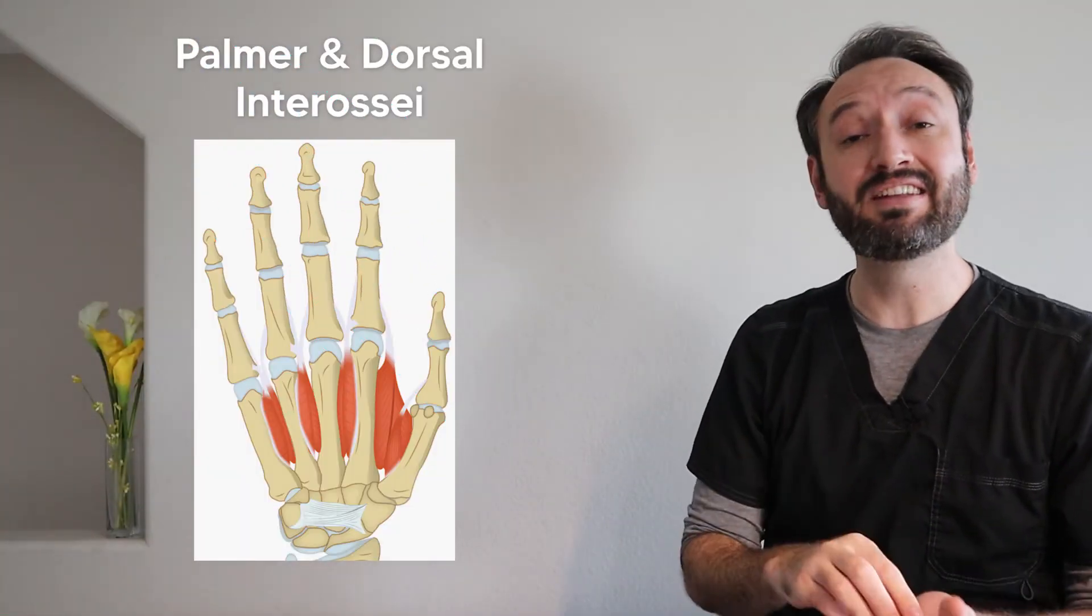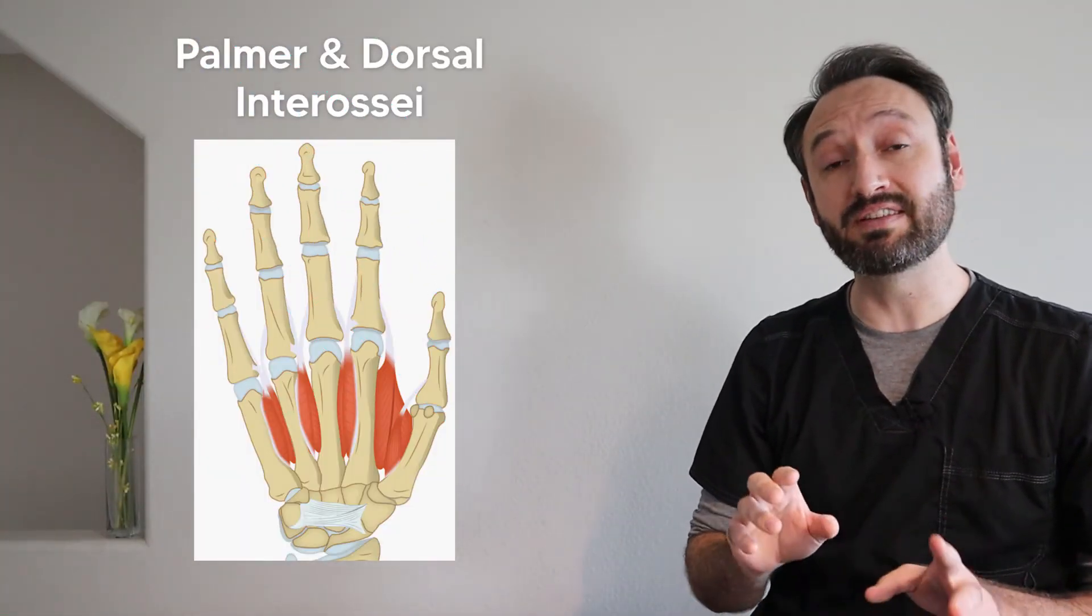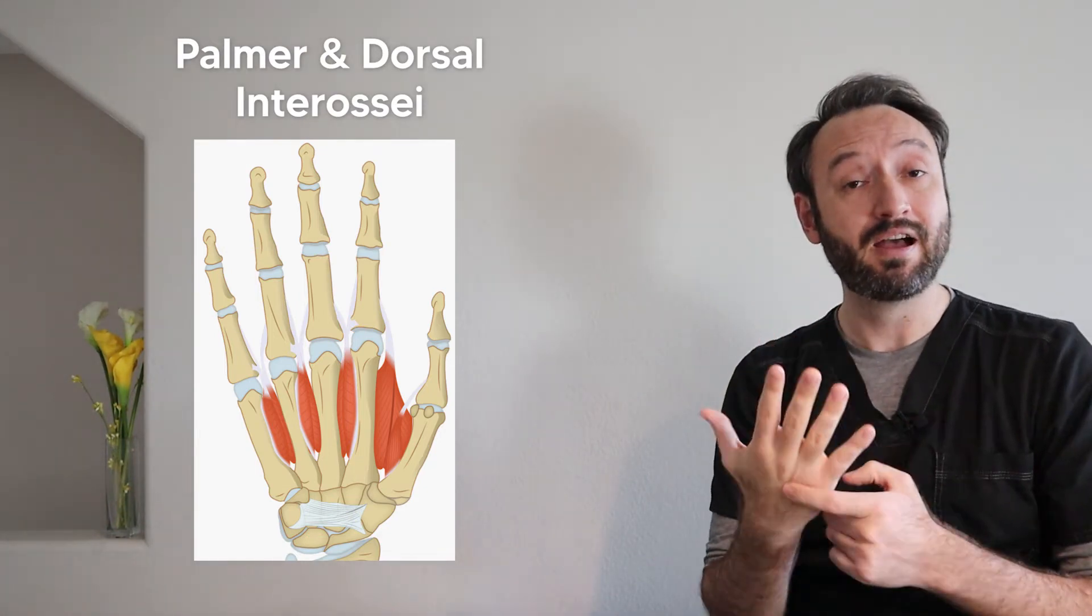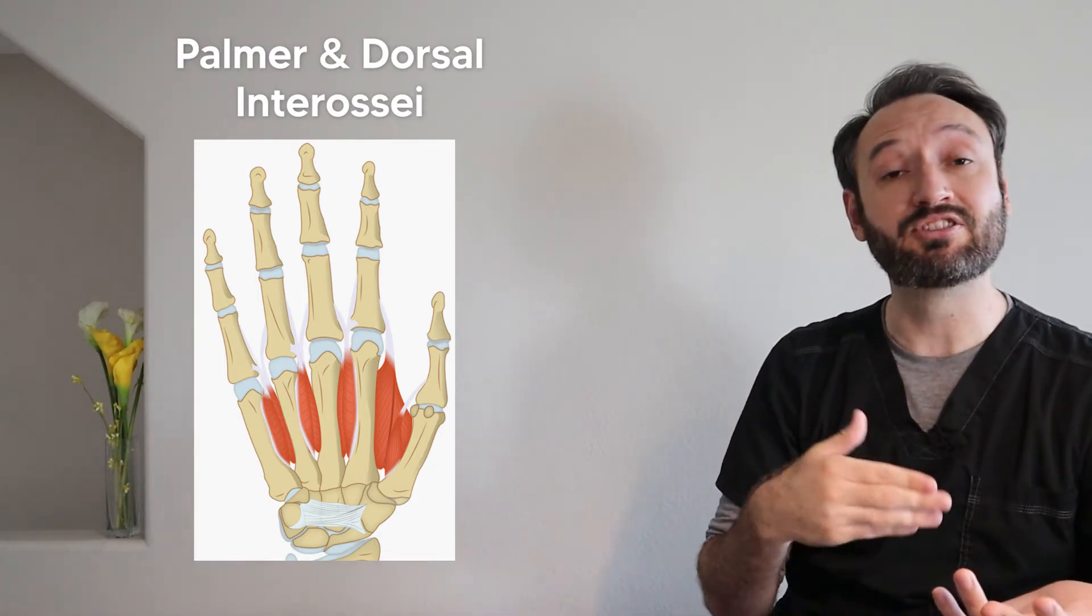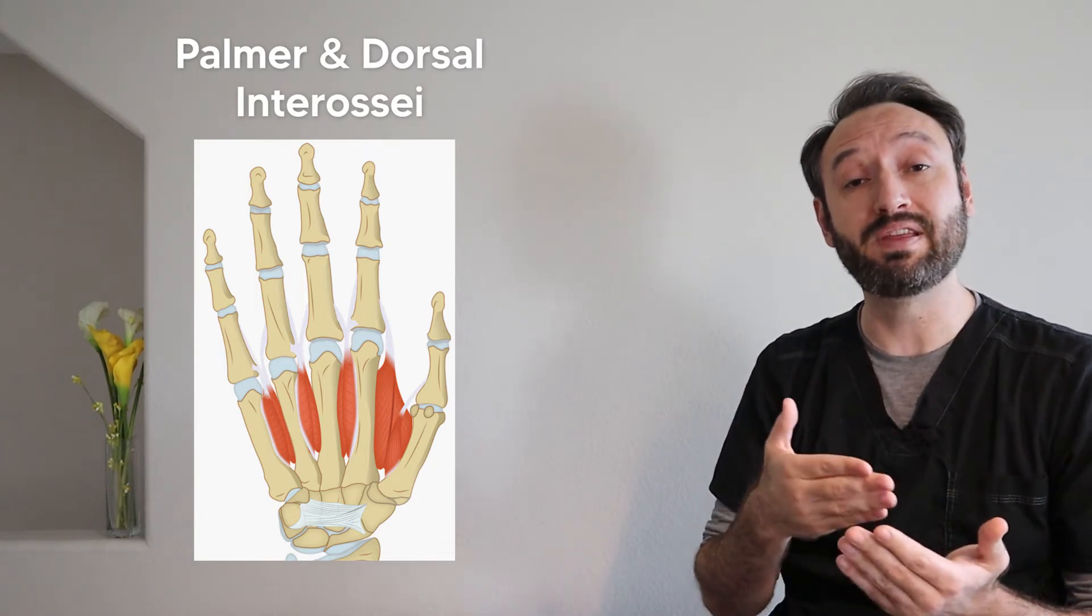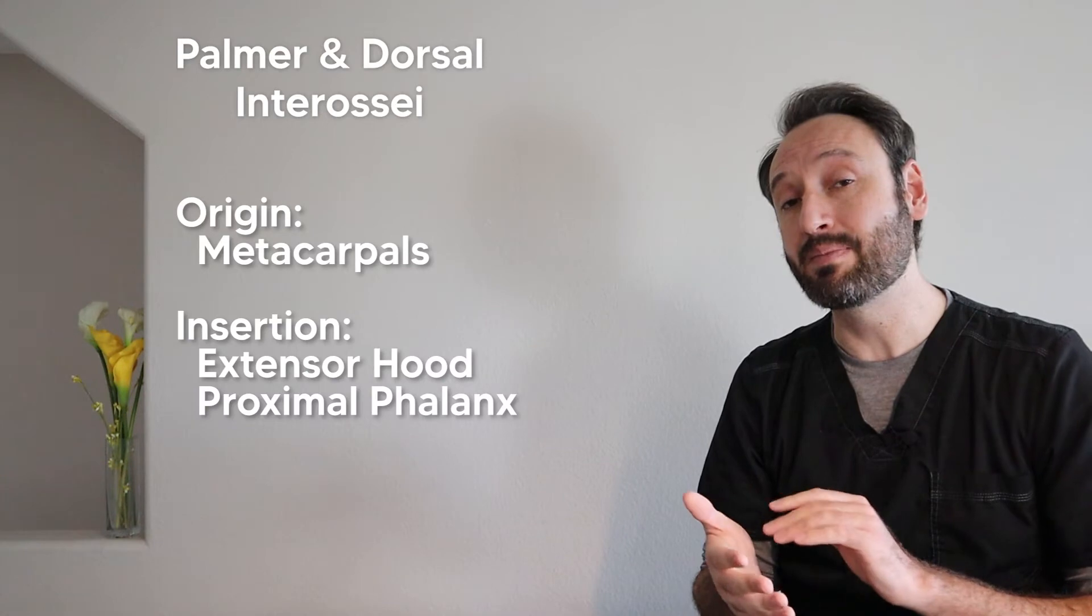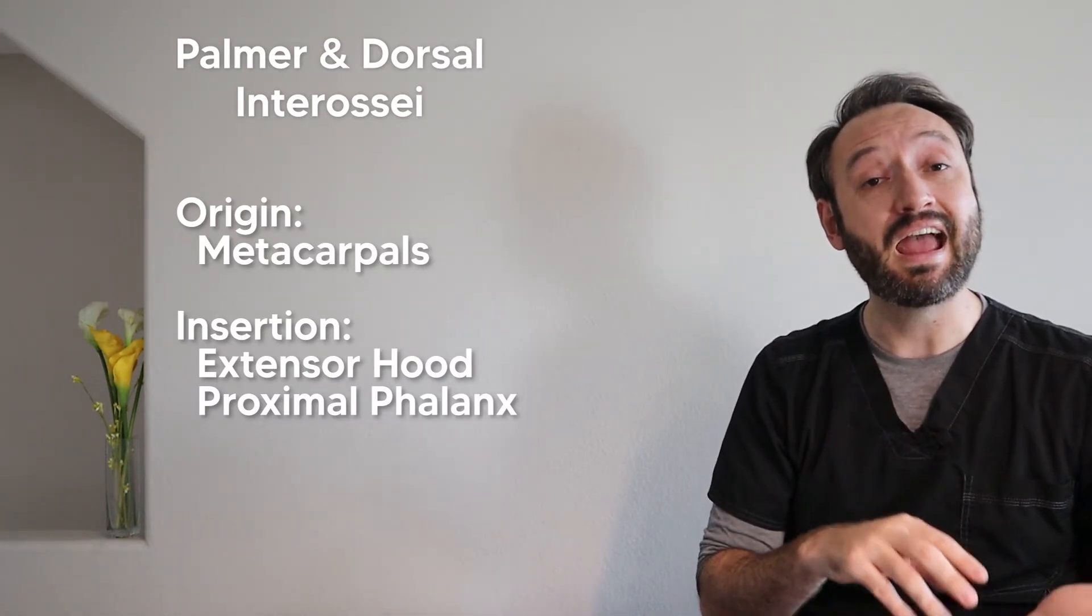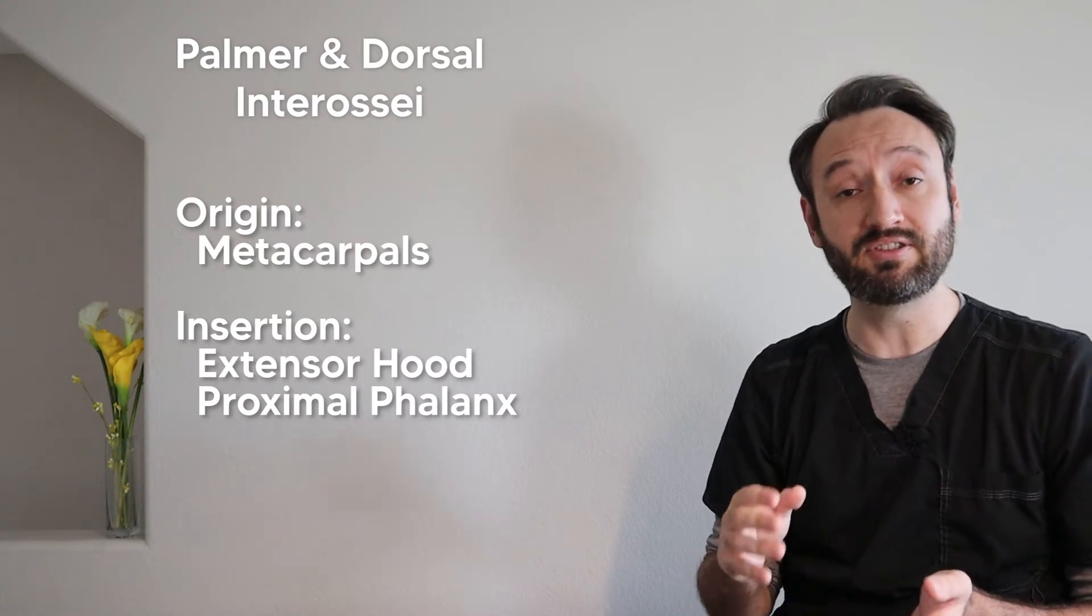Our last group of muscles is the interossei and there's actually two different types. We have the palmar interossei and the dorsal interossei. Of course interossei in this case is just Latin for between the bones and that's where you'll find these muscles between the metacarpals. So they originate off the metacarpals and then run distally and insert on the extensor hoods and the proximal phalanxes of the digits.